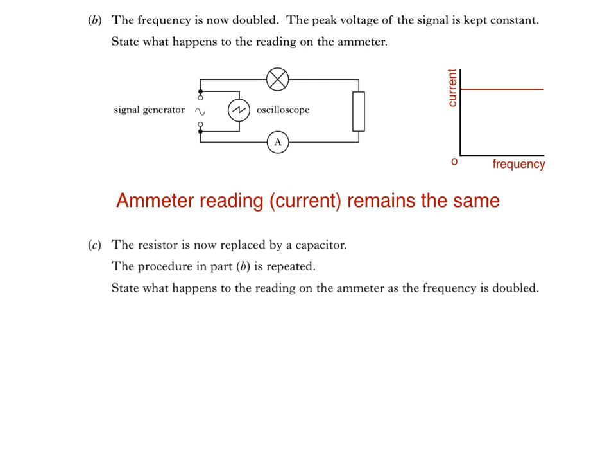Part C says, the resistor is now replaced by a capacitor. The procedure in part B is repeated. State what happens to the reading on the ammeter as the frequency is now doubled. The circuit would now look like this.